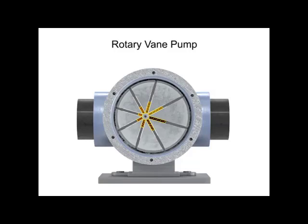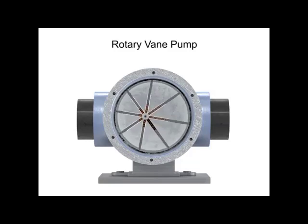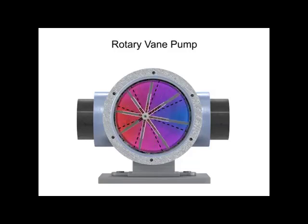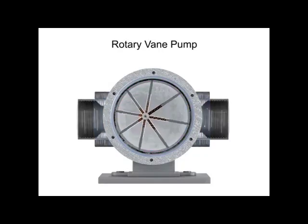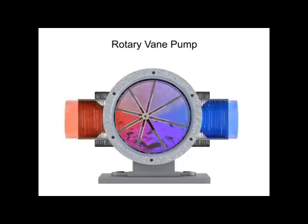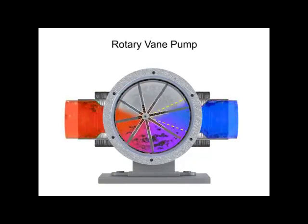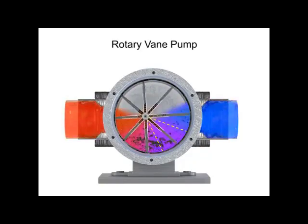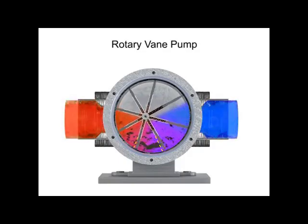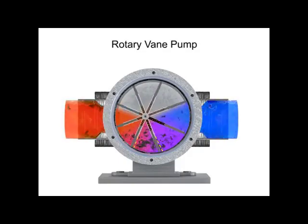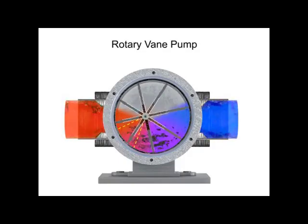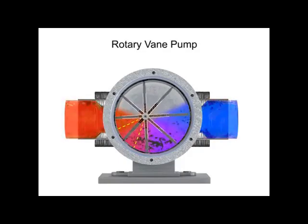As the vanes rotate, they create chambers of varying sizes within the pump. Fluid enters at the largest chamber. As the vanes rotate and retract, the chambers get smaller, forcing fluid to exit through the discharge port.